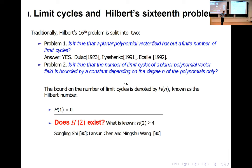I suppose everybody knows the 16th problem. If we denote H(n) as the maximum number of limit cycles for an nth-order polynomial system, we are looking at what H(n) is. Progress on this problem has been very limited after over 100 years. For a linear system, H(1) = 0 — no limit cycle, that is clear. For quadratic polynomials, by early work of the 90s, Shi Songling and Chen Lanshan and Wang Ming Shu gave examples of four limit cycles, which suggests H(2) is at least four, but what the right answer is remains open.